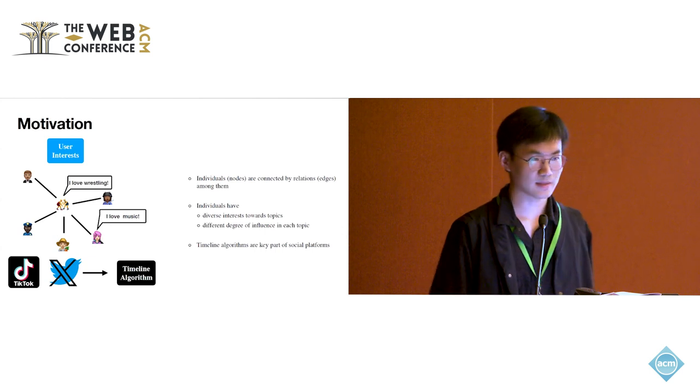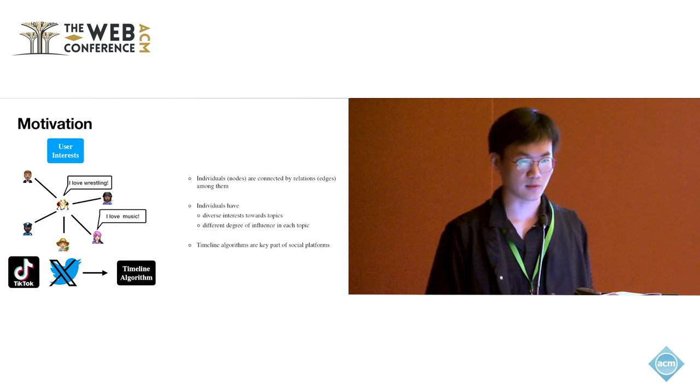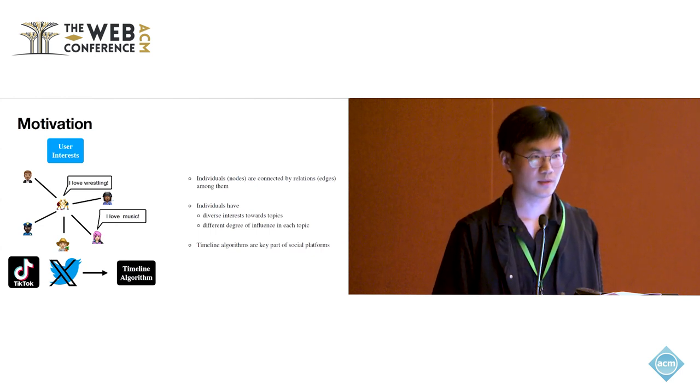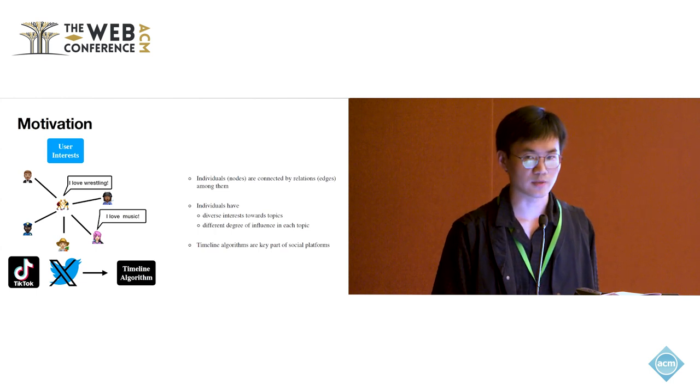And nowadays, timeline algorithms are key parts of social media platforms like Twitter and TikTok. For example, the Twitter for you timeline shows posts composed based on the accounts you follow and the topics you are interested in.